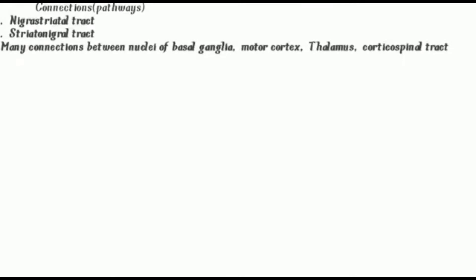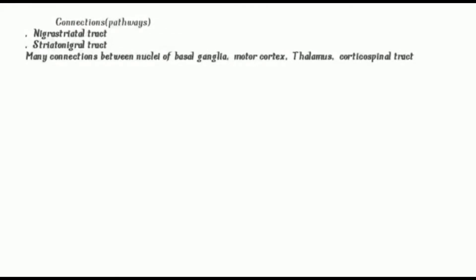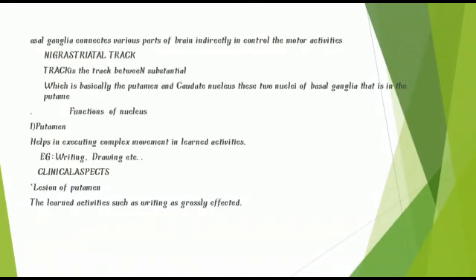There are two main tracts in the basal ganglia connections: the nigro-striatal track and the strio-nigral track. There are many connections between the nuclei of the basal ganglia involving motor cortex, thalamus, and corticospinal tracts. The basal ganglia indirectly connects to and controls motor activities of various parts of the brain.